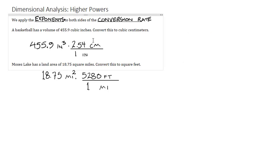A basketball has a volume of 455.9 cubic inches. We want to convert this to cubic centimeters. So we'll do exactly what we just did. We will take that exponent of 3, and we will apply it to everything here. Before you continue, you do need to find 2.54 to the third power. That comes out to 16.387064.